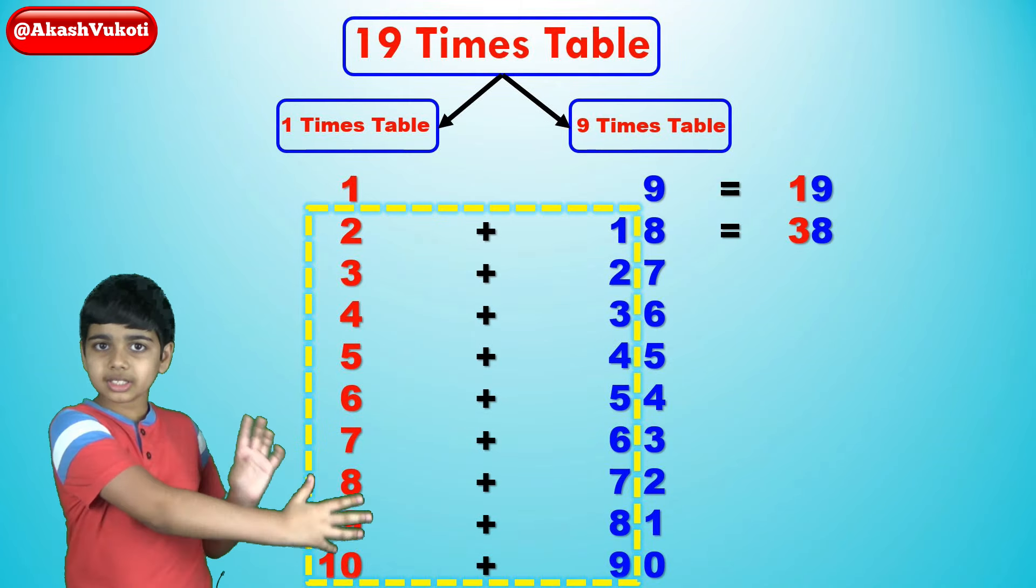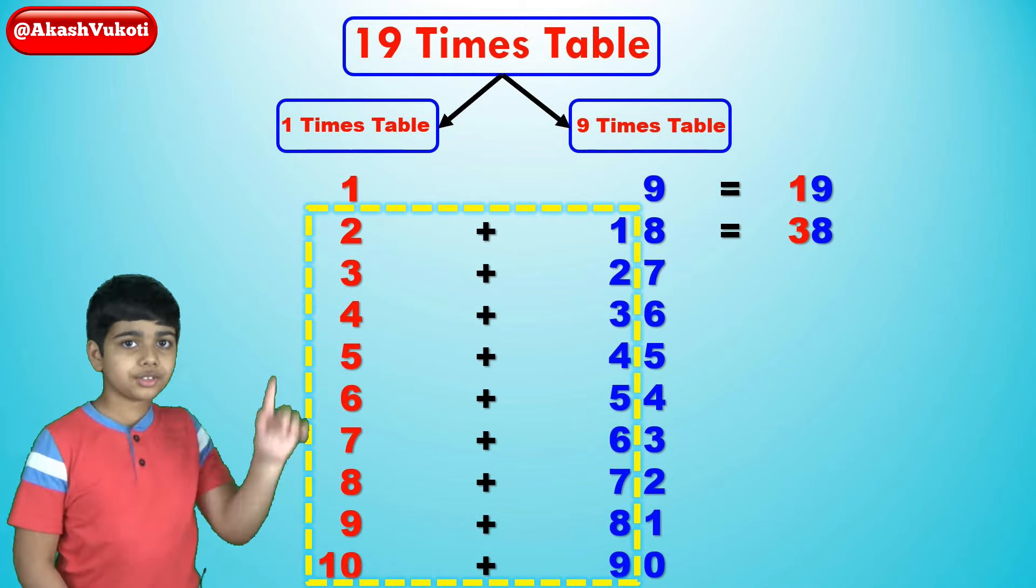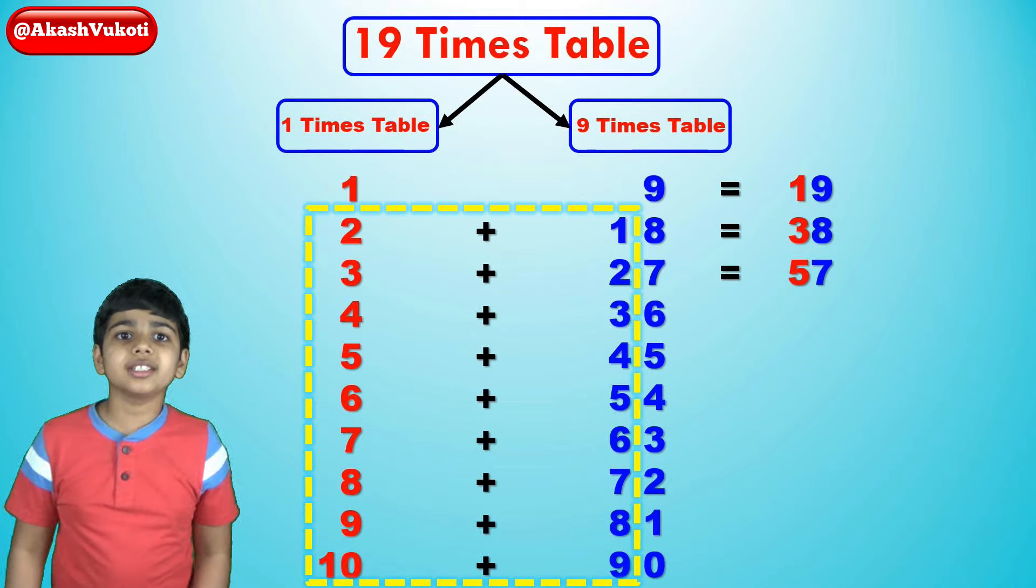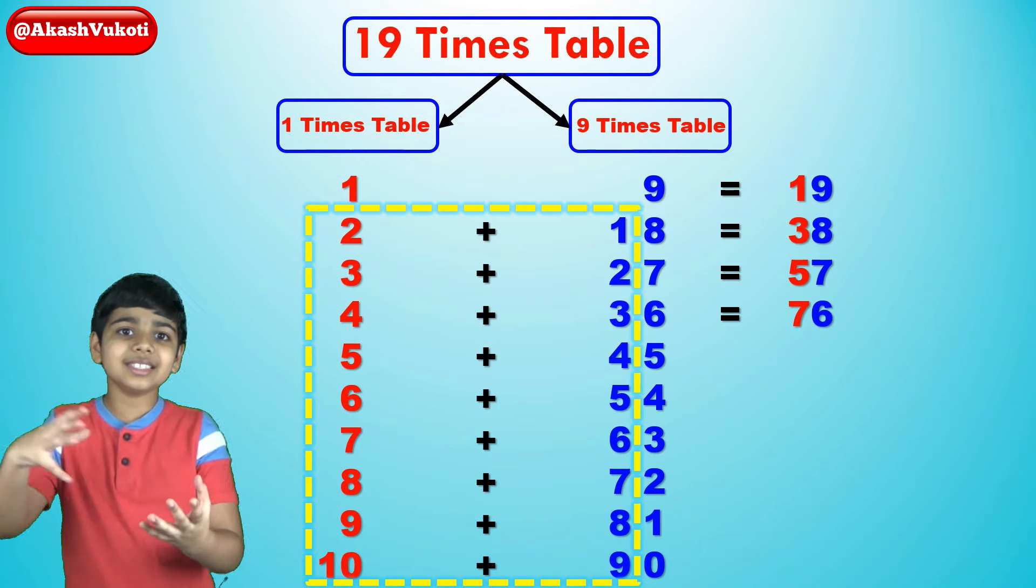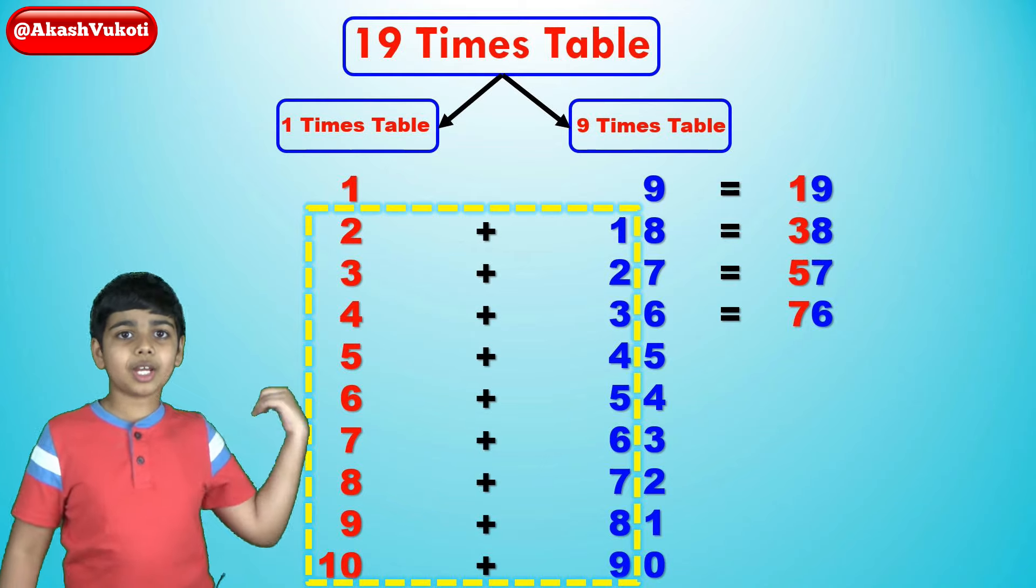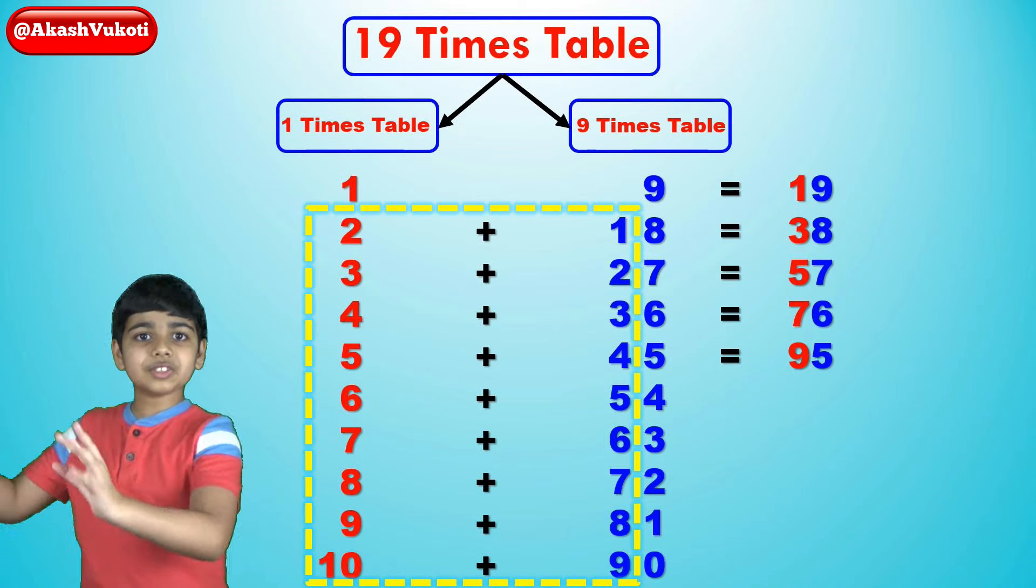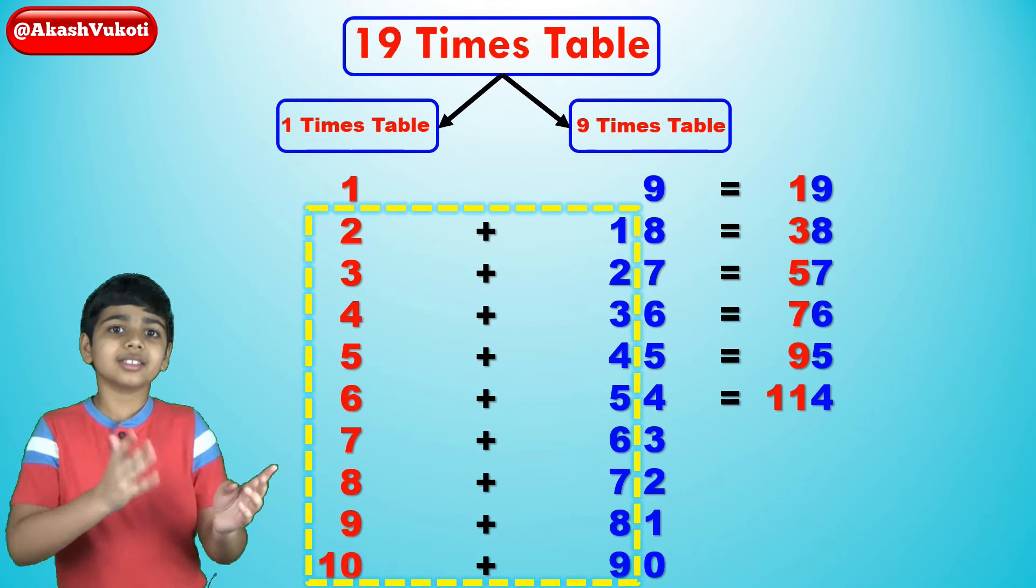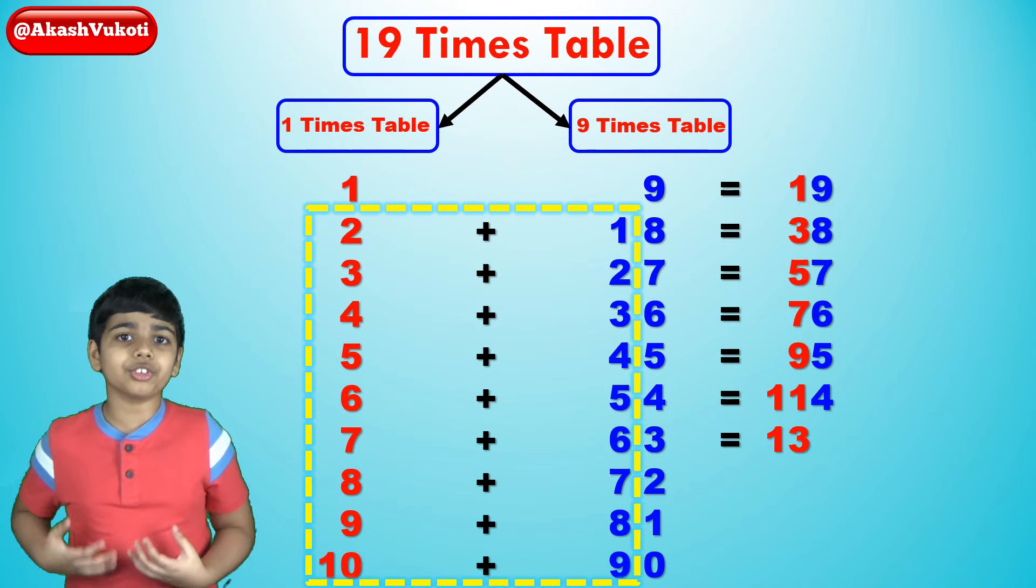And all of them in this box right here, those ones will get added together. So 19x3, 3, 27, 3 plus 2, 5, so we get 57. Then 19x4 is 4, 36, so 4 plus 3, 7 gets 76. Then 19x5 becomes 5, 45, so as you can see here, 5 plus 4, 9, get 95. 19x6 is 6 and 54, so 6 plus 5, 11, so 114. Then 19x7 becomes 7, 63, so 7 plus 6, 13, so we get 133.